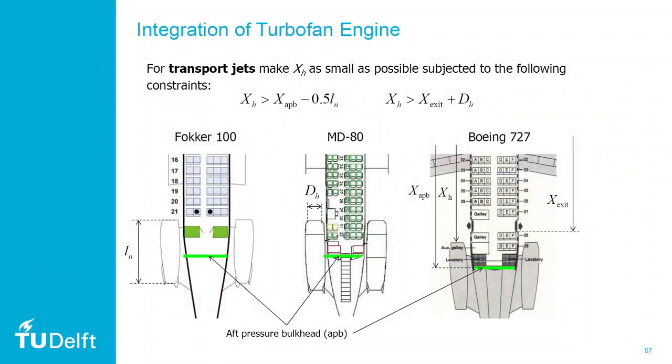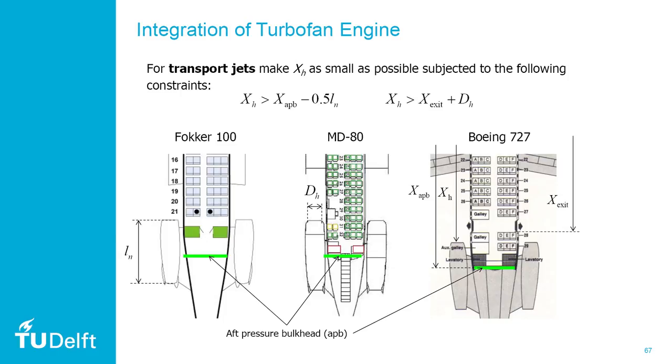The rule says that the engine highlight or the inlet plane of the engine can be ahead of the aft pressure bulkhead meaning the end of the cabin with a length of about half the engine length. So the engine length was 4.8 meters.